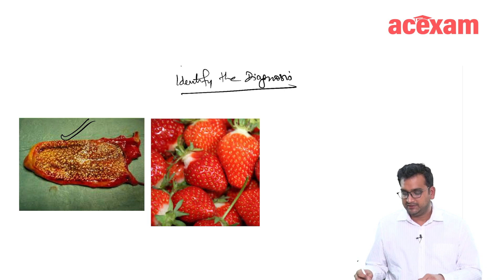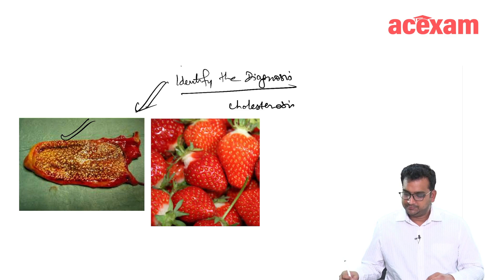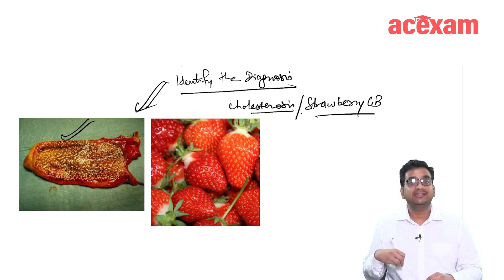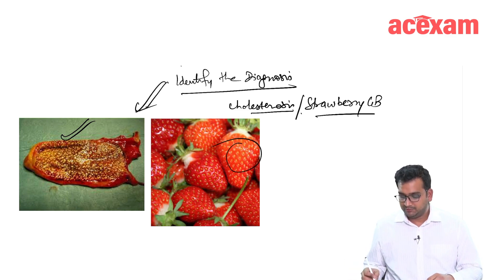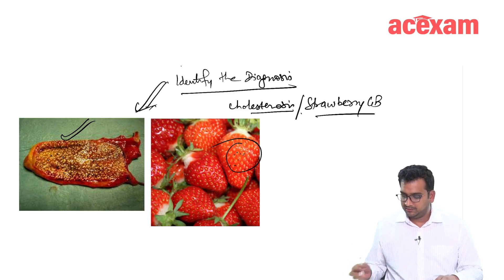The diagnosis here is cholesterosis, or strawberry gallbladder. These strawberries will not be there in the exam, so you will have to remember it this way. The dots which are there in the strawberry — a similar kind of dots are there in the gallbladder — that is why it resembles the strawberry and is known as strawberry gallbladder.